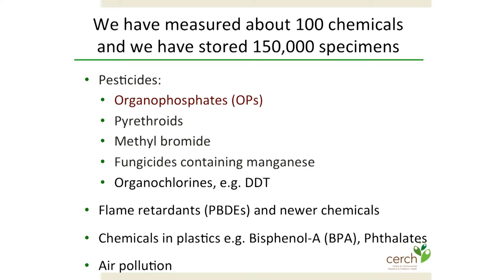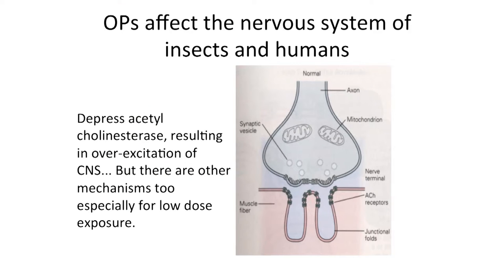As everyone here knows, organophosphates affect the nervous system of both insects and humans by depressing acetylcholinesterase, resulting in overexcitation of the central nervous system. But we're learning there are many other mechanisms — Ted Slotkin has shown that even low-dose exposure may affect things like sodium channels.